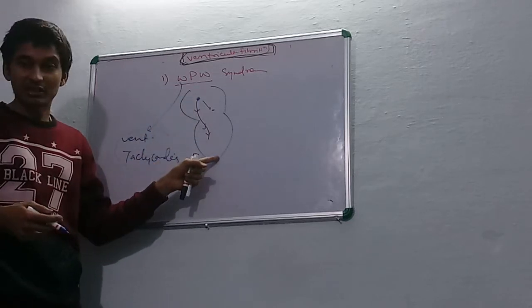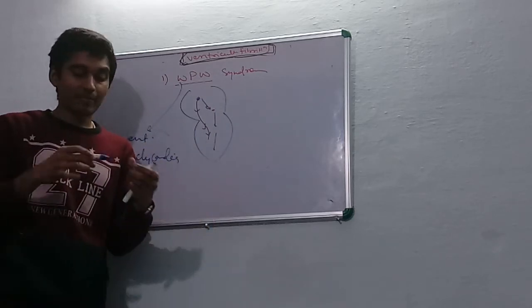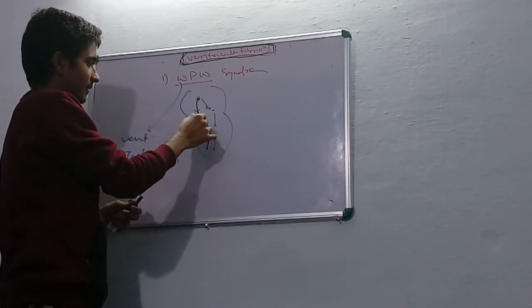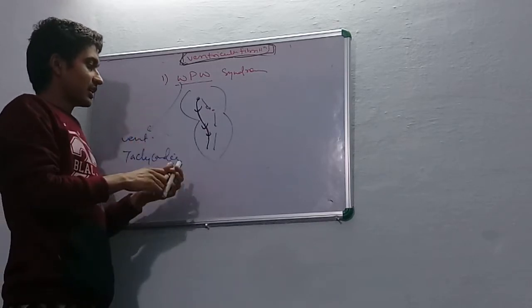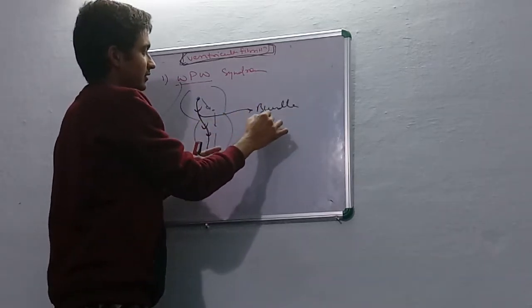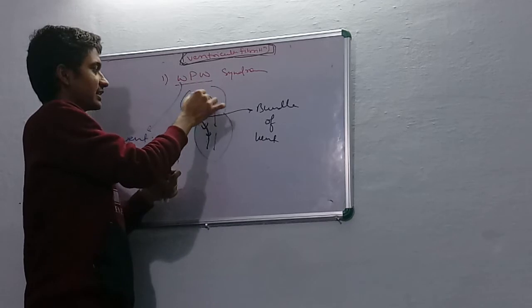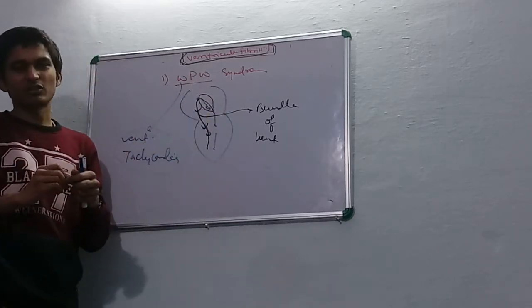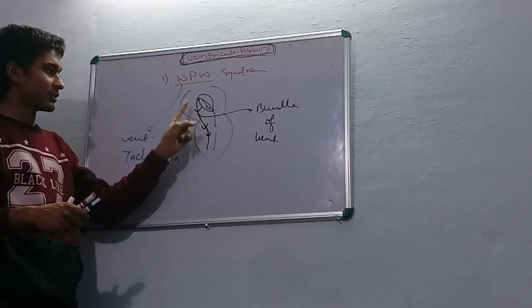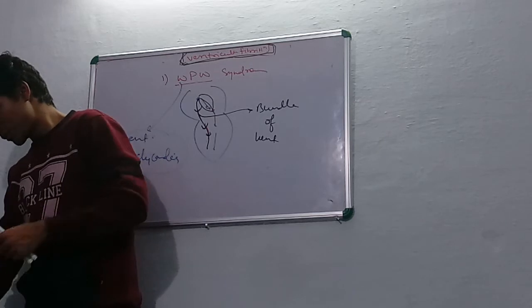Because this impulse causes ventricular contraction, and the normal impulse coming from the normal pathway also causes ventricular contraction. This bundle is known as the Bundle of Kent. This new bundle is formed between the atrium and ventricle. This is an abnormal bundle formed between the atrium and ventricle.